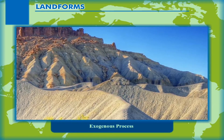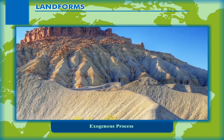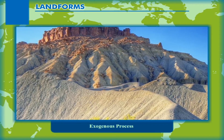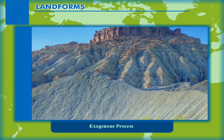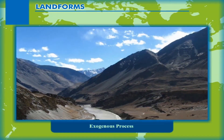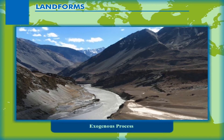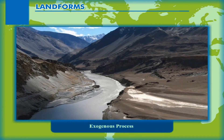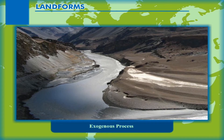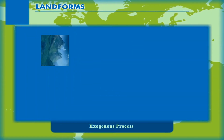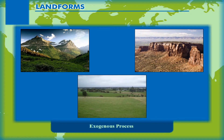The wearing away of the earth's surface is called erosion, and rebuilding takes place by the process called deposition. These two processes are carried out by running water, ice, and wind. We can group different landforms depending on elevation and slope as mountains, plateaus, and plains.